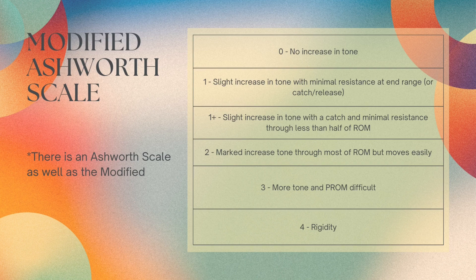One-plus is a slight increase in tone with a catch and minimal resistance through less than half of the range of motion. Two is a marked increase in tone through most of the range of motion. Three is when passive range of motion is difficult, and four is when the patient is rigid.